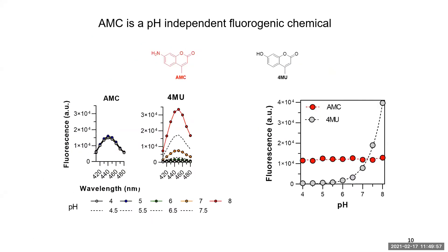Next, we tested AMC and 4-MU over different pH values. The AMC shows identical spectra over pH 4 to 8, while the 4-MU signal increases with pH. In the comparison graph, AMC has a flat line but 4-MU increases as pH increases. This demonstrates that AMC is pH-independent, making it more reliable for enzymatic assays.